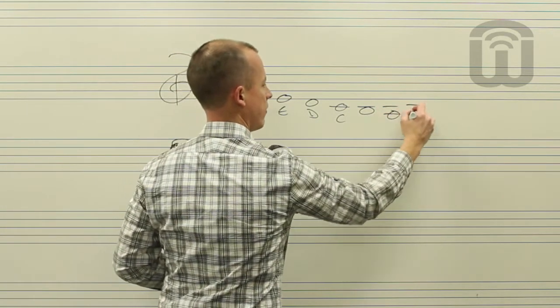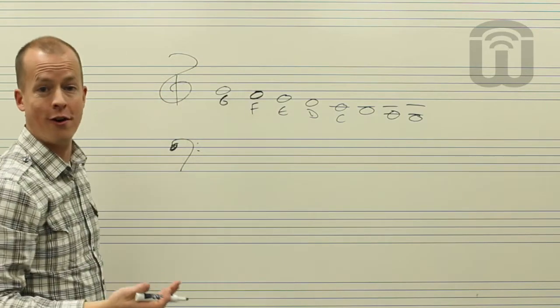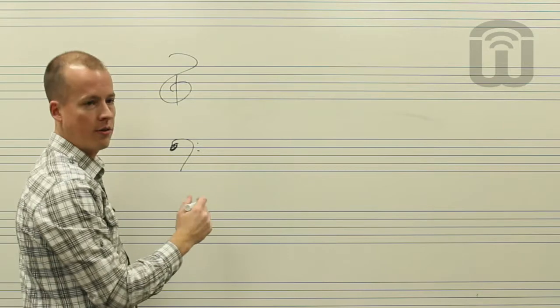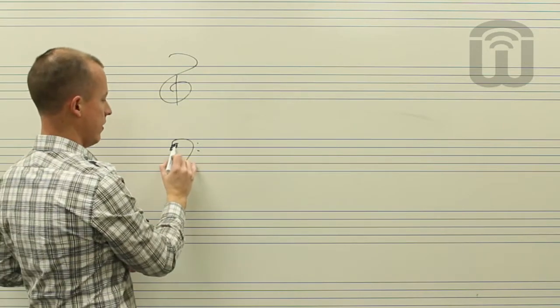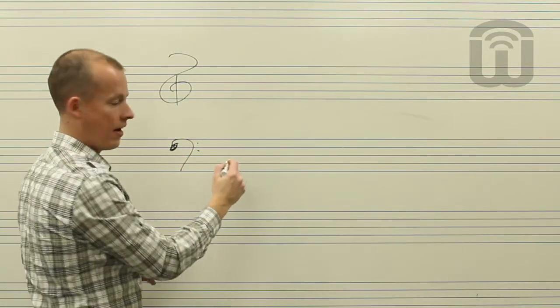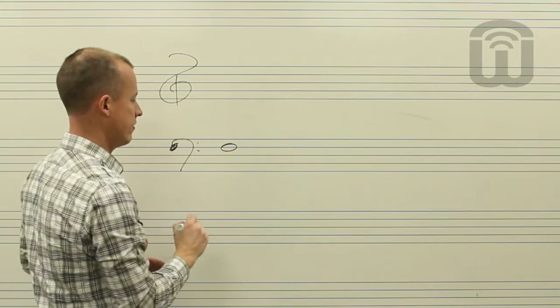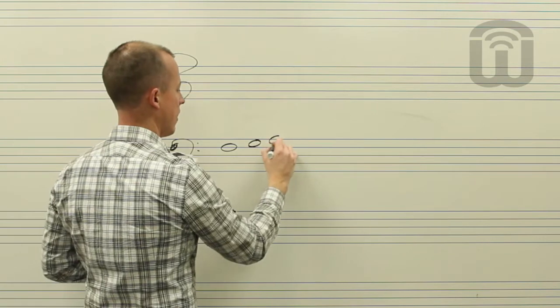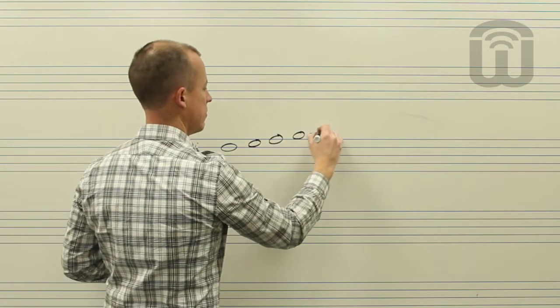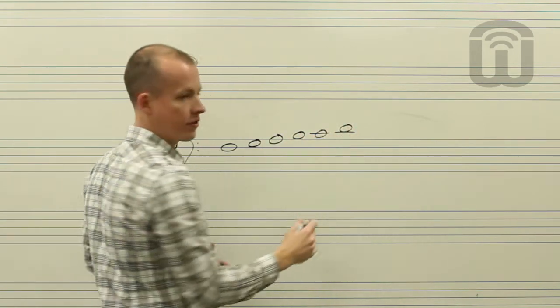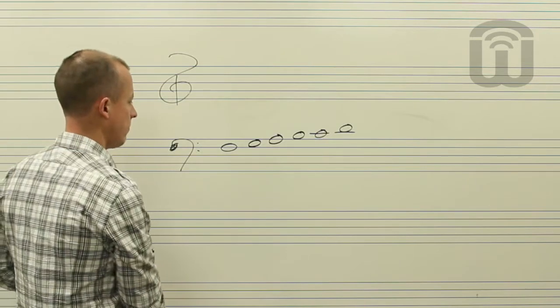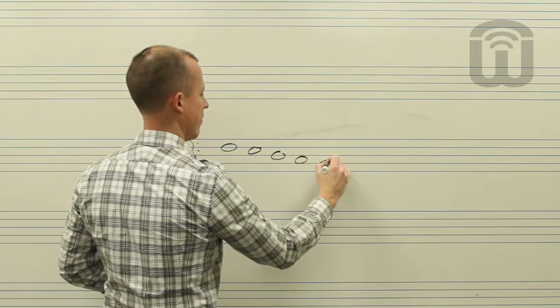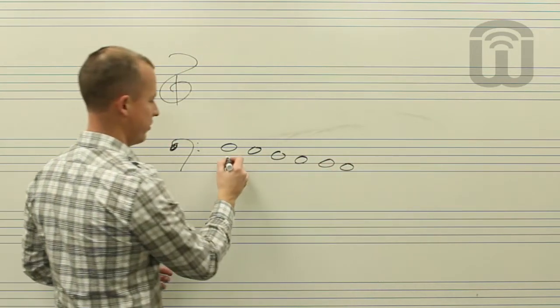That's all there is to it. Down here we have the F clef because it highlights this fourth line of the staff and that's where F is. To go up we go space line space line, so we go F, G, A, B, C on the first ledger line, D above the first ledger line and so on. To go down line space line space line space and so on, we just go backward in the musical alphabet: F, E, D, C, B, A.